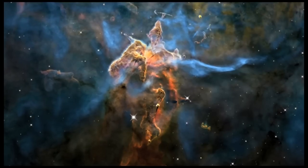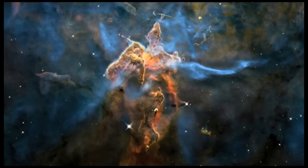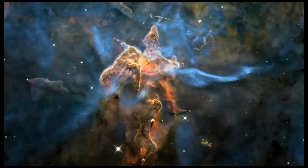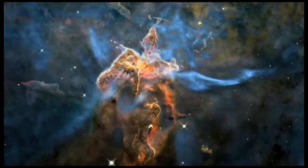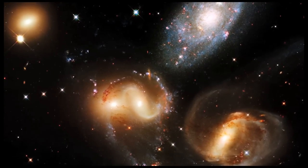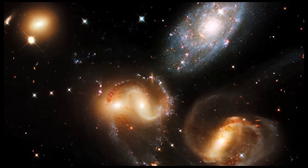WFC3 is a combined ultraviolet, visible and infrared camera that dramatically extends Hubble's ability to image astronomical objects. With these new capabilities, Hubble is still pushing the boundaries of science after two decades in orbit.